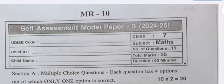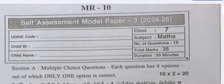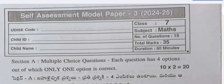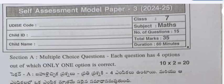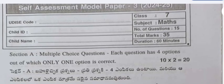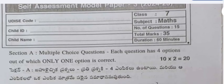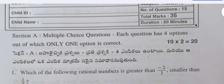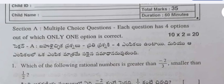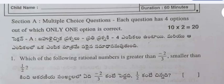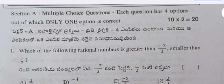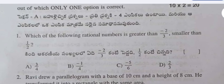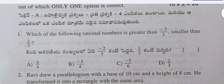Hello, welcome to my YouTube channel. Today's video is about the self-assessment model paper 3, 2024-25 of class 7 maths. Number of questions: 15, total marks: 35, duration: 60 minutes. Multiple choice questions are given; each question has four options, out of which only one option is correct. 10 questions are given, and for each correct answer two marks are allotted.